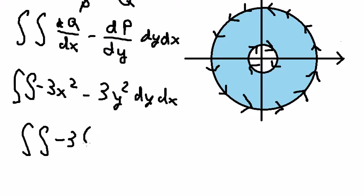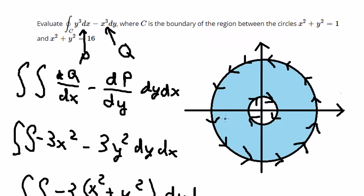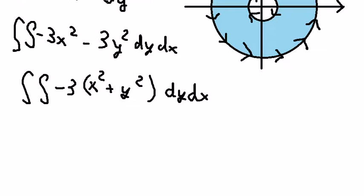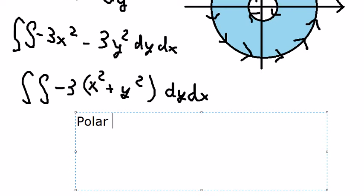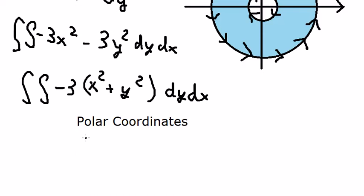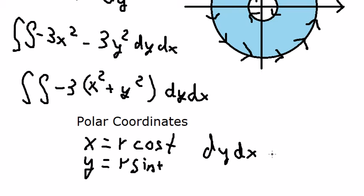So we do factorization. Because they are circles, we can use polar coordinates. So we got x equals r cos t, y equals r sin t. dy dx we change to r dr dt.